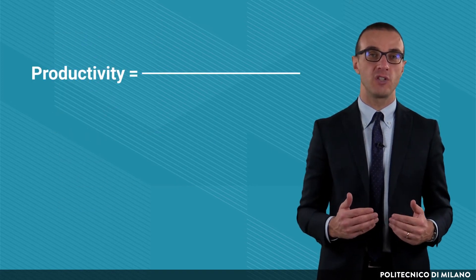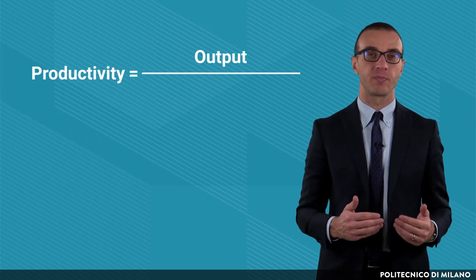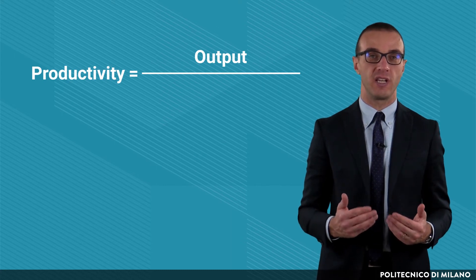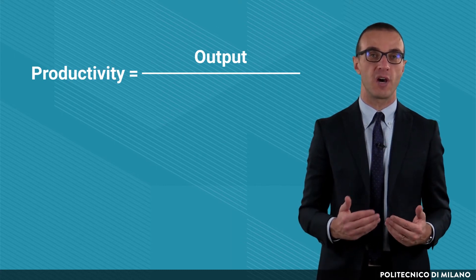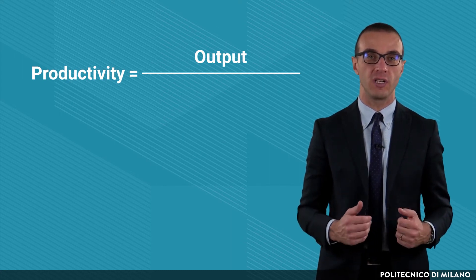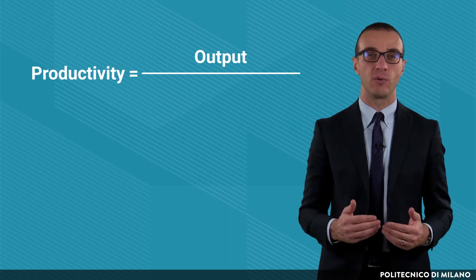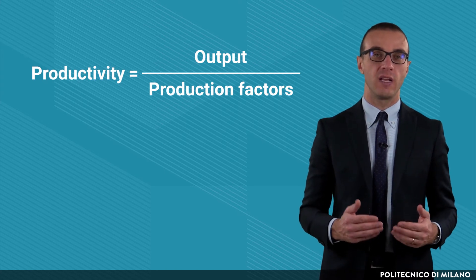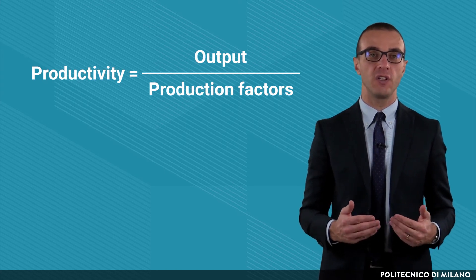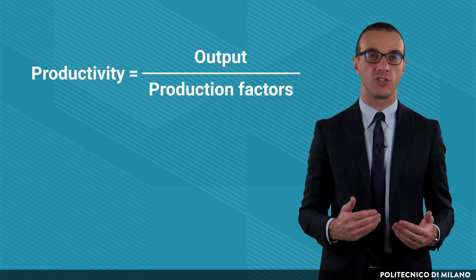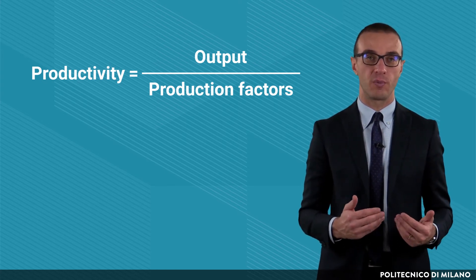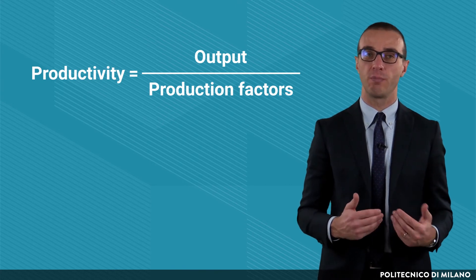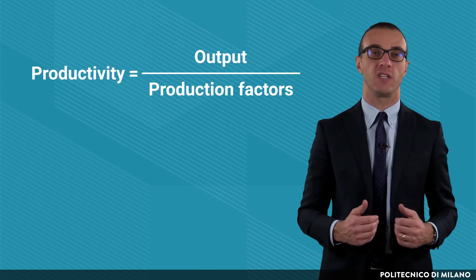Productivity is the ratio between the output — delivering products meeting the expectations in terms of product and service quality — and the input, which are the production factors. It may refer to different elements such as labor productivity, energy productivity, and material productivity.